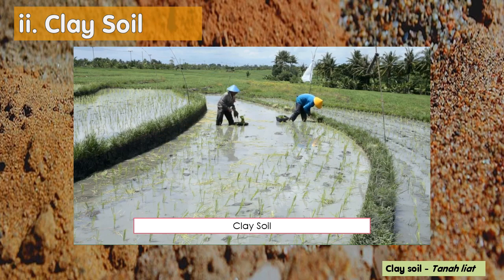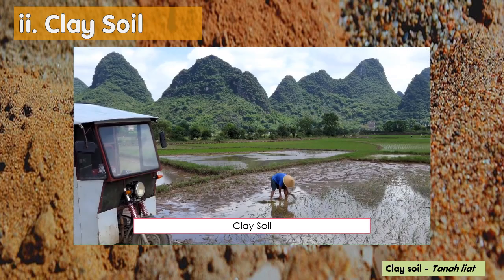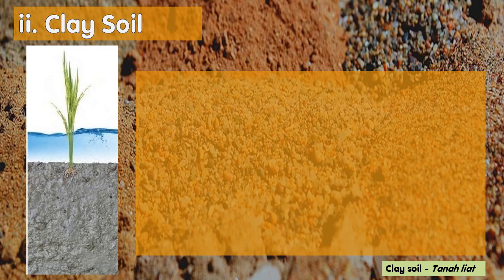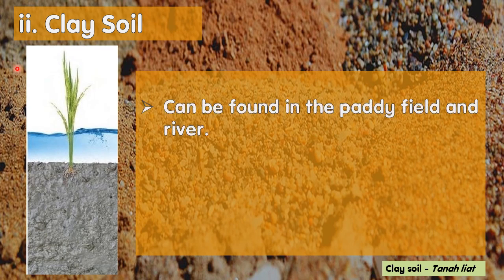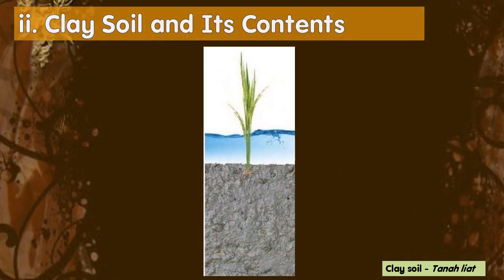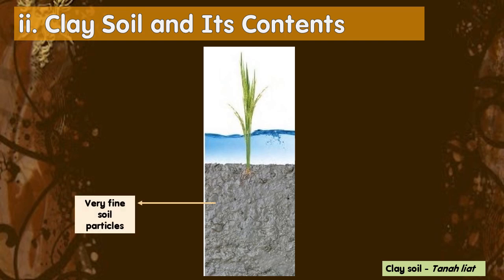The second type of soil you are going to learn today is clay soil. Clay soil can be found in the paddy field and river. It is reddish or grey in colour. Clay soil is suitable for growth of a few plants, such as the paddy plant, as it holds lots of water. Clay soil contains very fine soil particles, and that is why clay soil retains the most amount of water.